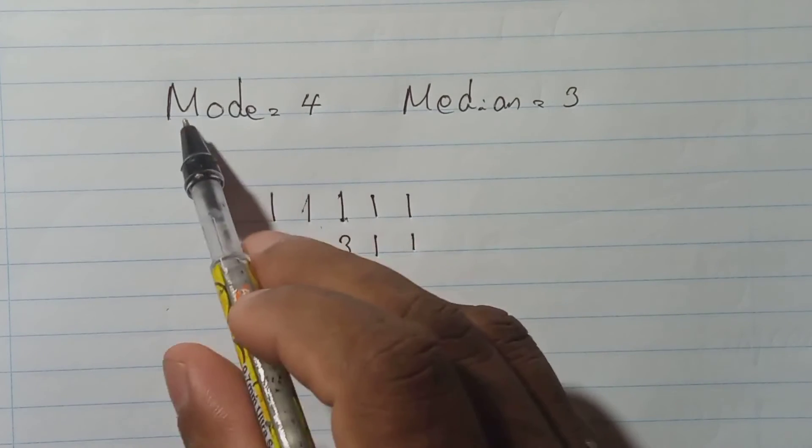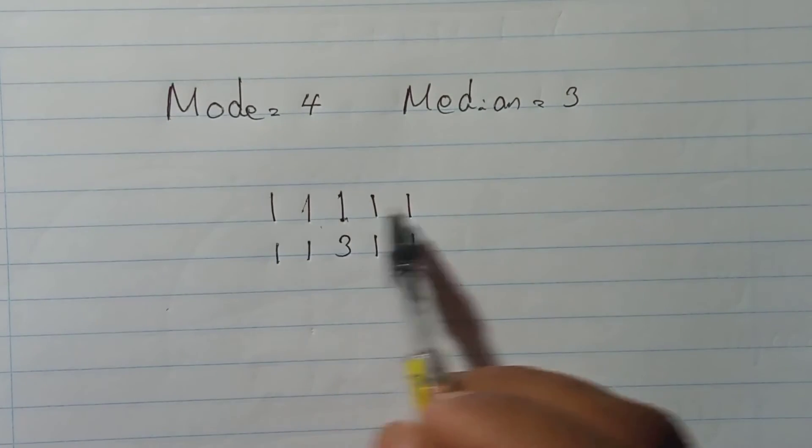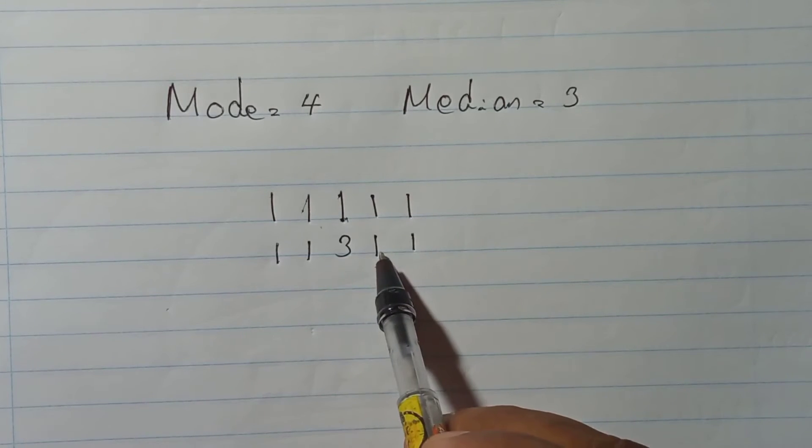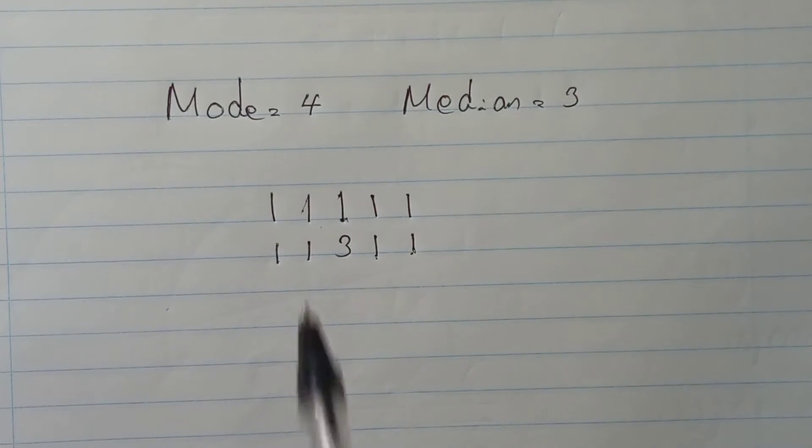And they tell you here mode is 4, mode is 4. Now when we write in ascending order, 3 then must be somewhere here, here 4, and not only 4. Here 4 is the mode. To become 4 mode, 4 must be at least twice. That's why it is we call mode. Mode means most occurring number.